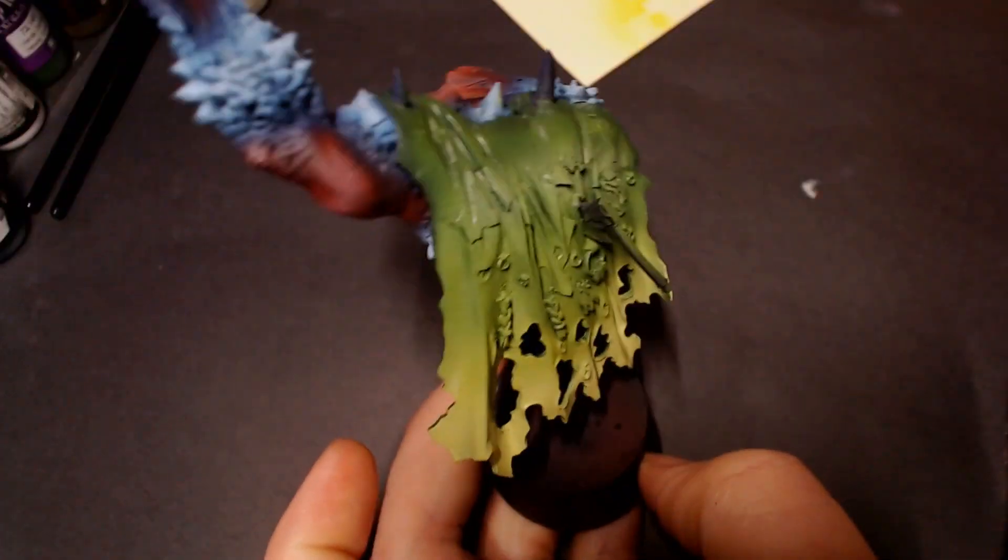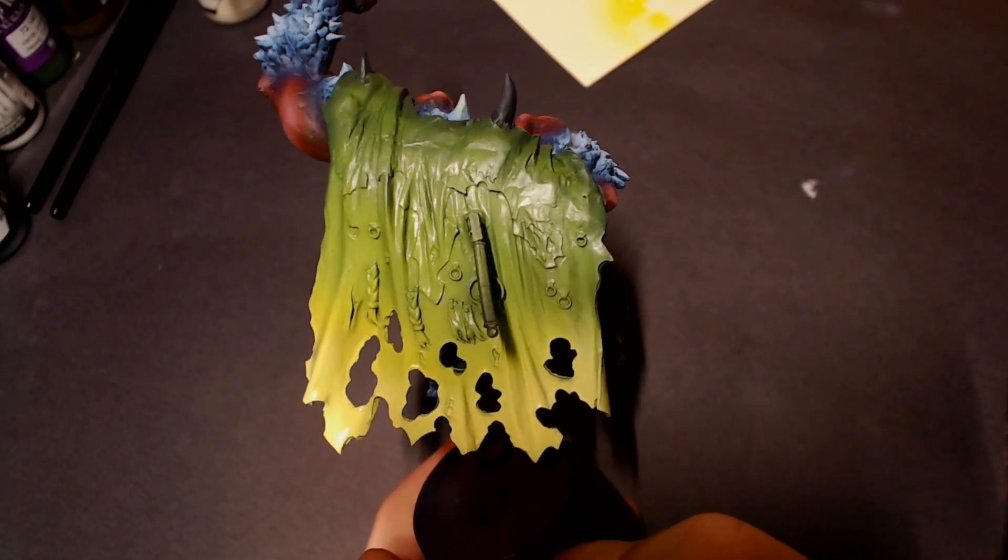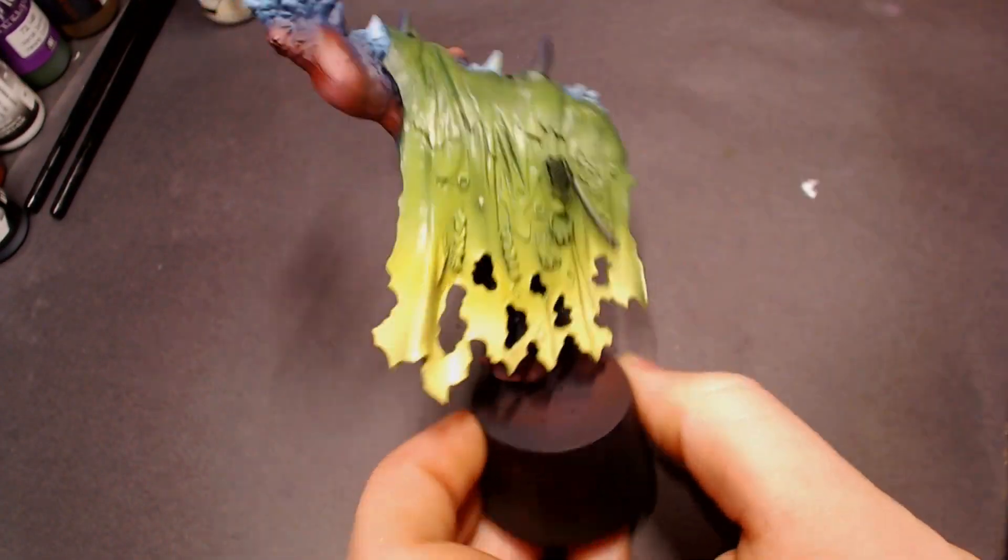Remember when you're doing a double-sided cape like this, you've got to remember to hit both sides with each step. So you can see after I did the back, I pulled that little piece of cardstock out and hit the inside where it was safe, making sure not to get any overspray on our skin tones.